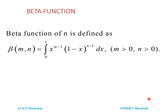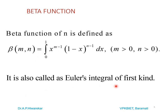We will now see what is the Beta function. Beta function Beta(m,n) is defined as the integral of x^(m−1) · (1−x)^(n−1) dx, with limits of integration 0 to 1, where the condition is m > 0 and n > 0. It is called Euler's integral of the first kind. We already saw that Gamma(n) is called Euler's integral of the second kind, whereas the Beta function is called Euler's integral of the first kind.